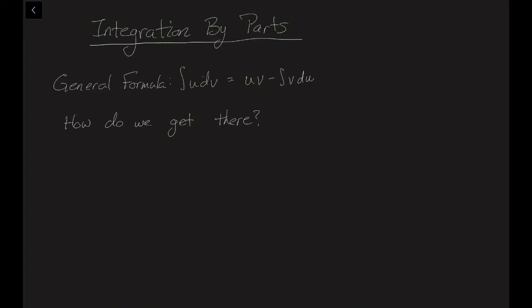Hi, so today we're going to be talking about integration by parts. The general formula that you'll normally see in a calculus textbook is shown on the screen: the integral of U dV equals UV minus the integral of V dU. But the big question is, how do we actually get to this formula?